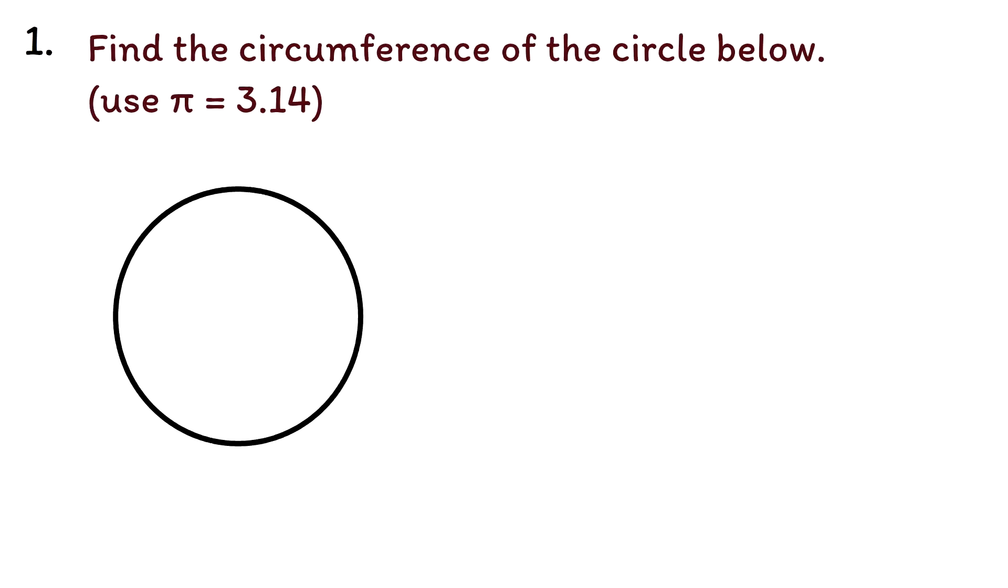Question 1. Find the circumference of the circle below. The formula to find the circumference of a circle is pi times the diameter. This formula will be given to you on the GED.